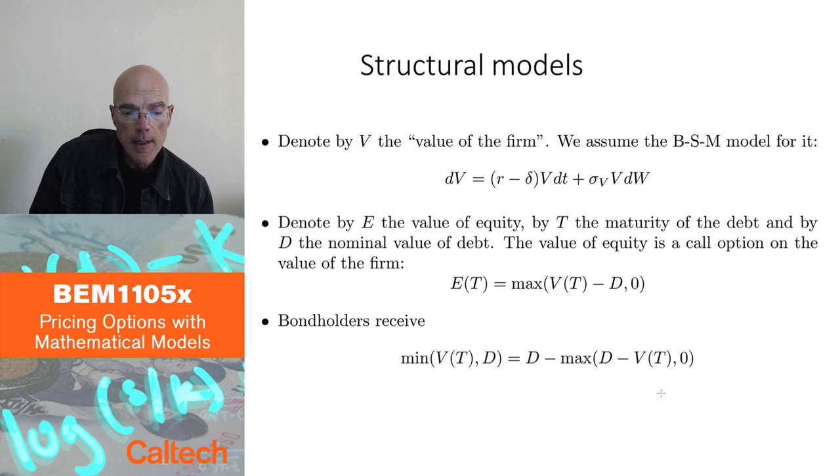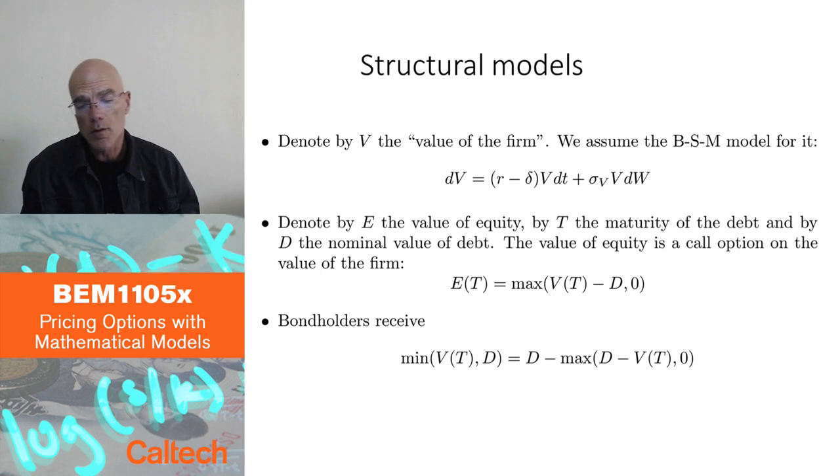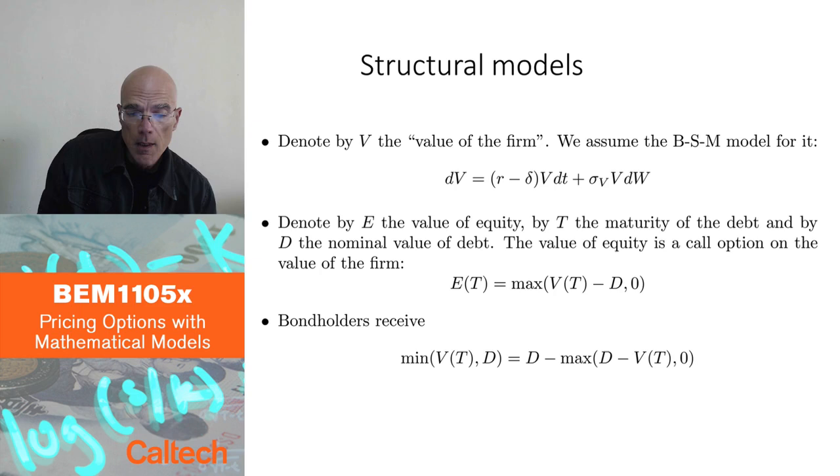Merton said, let's model the value of the firm and the value of the firm is modeled as we model stock prices in the Black-Scholes-Merton model directly under the pricing probability. So, dV is RV, there is a RVdt term and then sigma VdW term. Except you may also want to subtract here delta, delta might be like dividend payments or some kind of payments that are going out of the value of the firm.